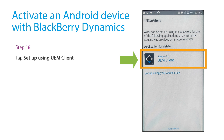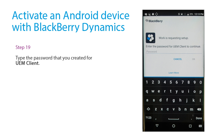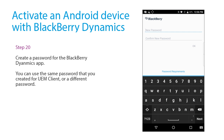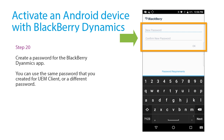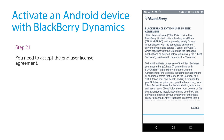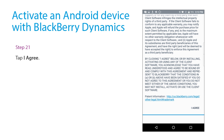Setting up BlackBerry Work using UEM Client means that you don't need to use an access key. Type the password that you created for UEM Client. Create a password for the BlackBerry Dynamics app — you can use the same password that you created for UEM Client or you can create a different one. You need to accept the End User License Agreement for the app. Tap I Agree.